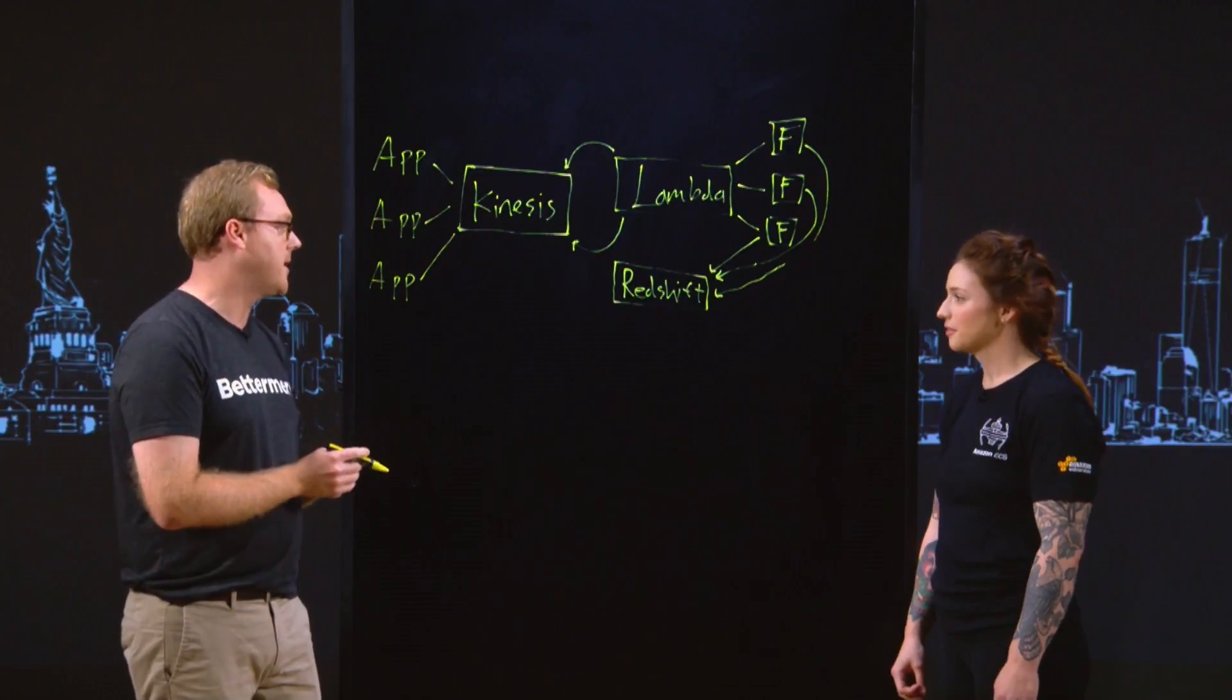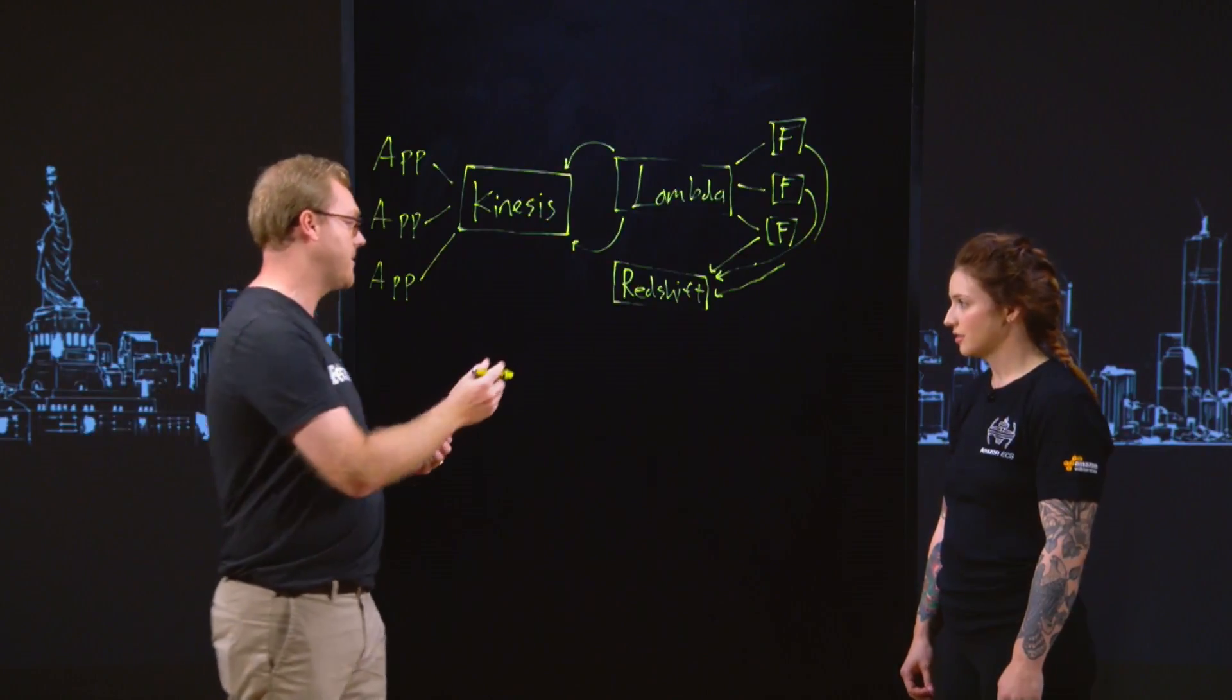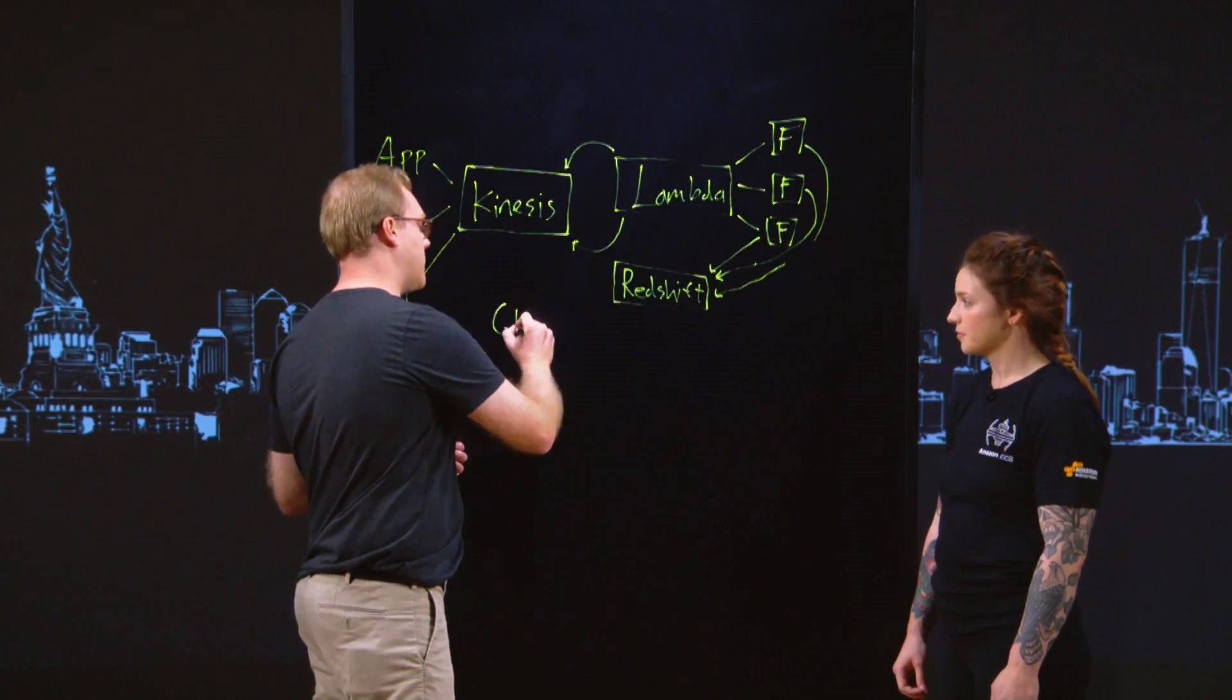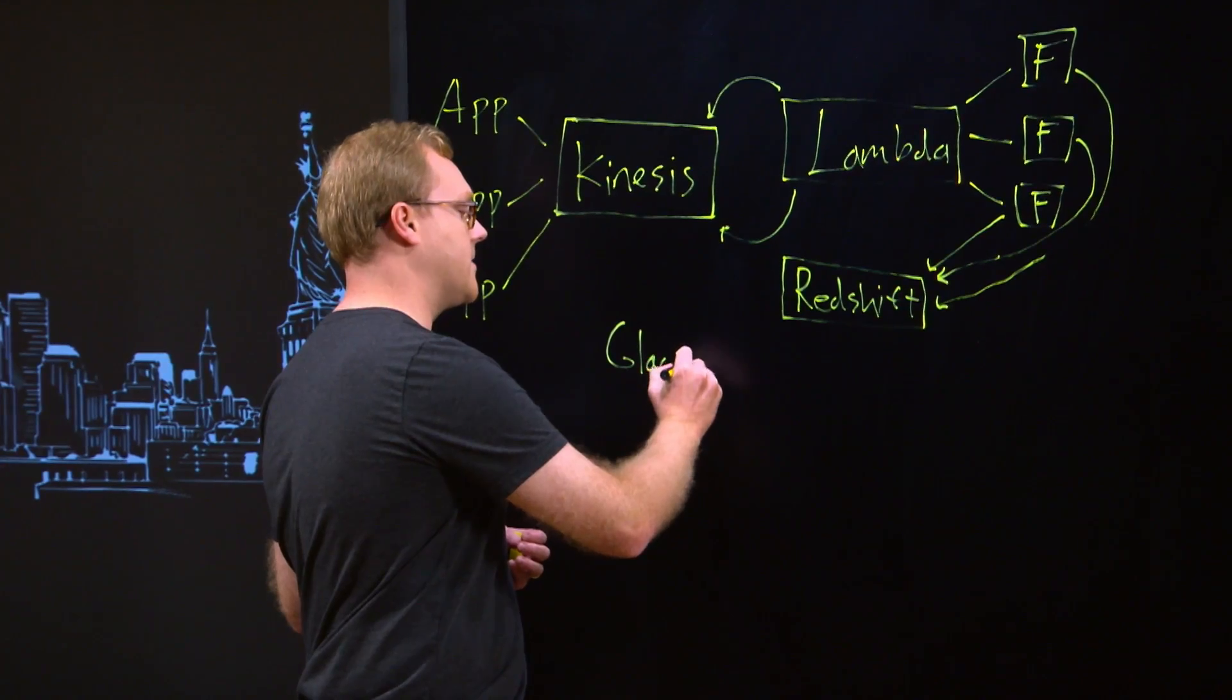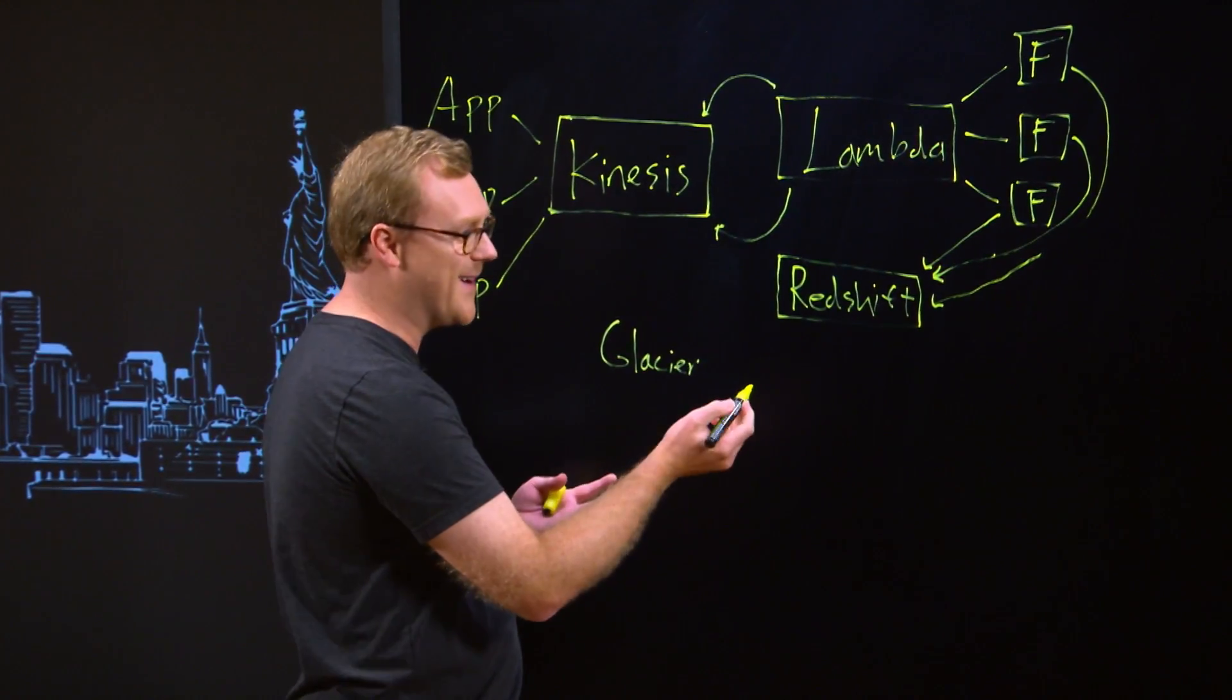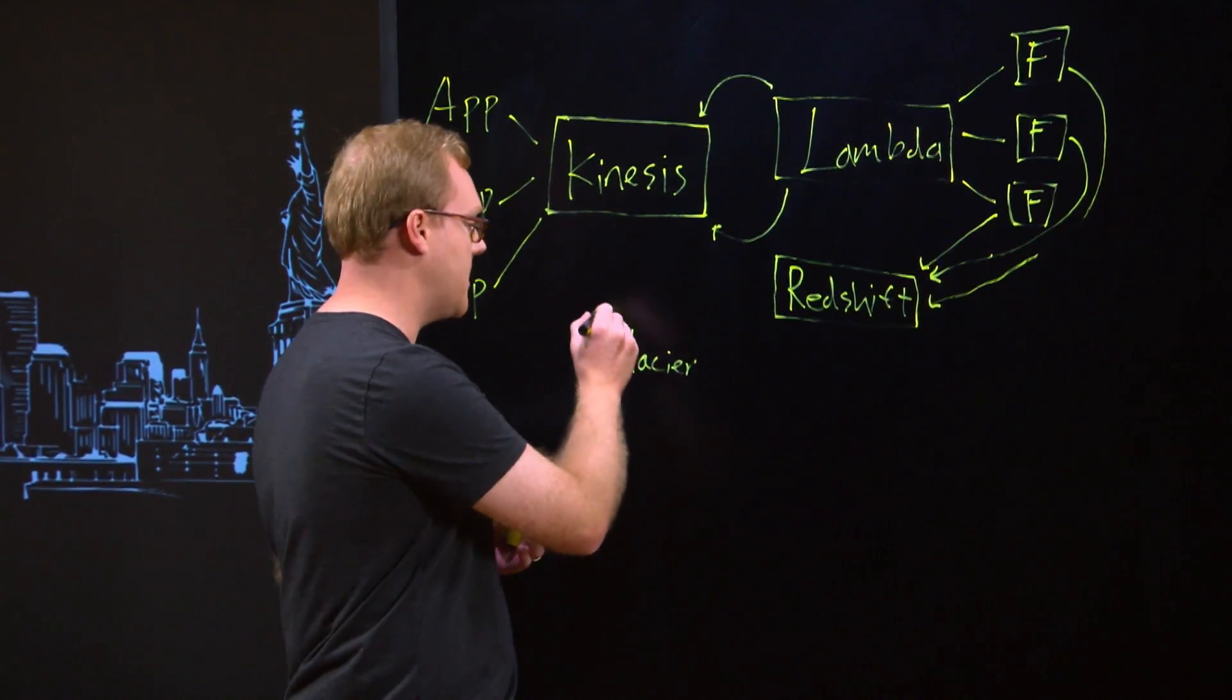So the last step along the way, which meets our compliance use case, is Amazon Glacier. So Glacier has a feature called Vault Lock, which allows it to be a WORM compliance store, which means write once, read many. Okay.